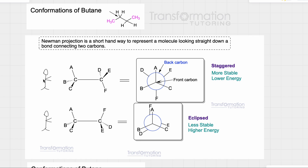For example, if you're the person on the left looking at this molecule, you will face this carbon straight on. This will be your front carbon, and on top you will see group A. To the right you will see group C and to the left you will see group B. The carbon behind it is the back carbon, represented by this circle, and this carbon is attached to fluorine going down, so you would see fluorine down. Group D to the left and group E to the right.